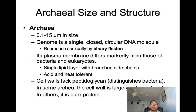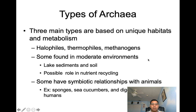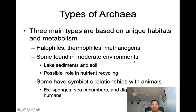Archaea thrive in unusual environmental conditions and extreme habitats — some in salty environments, some in hot environments, and some in anaerobic swampy environments. There are three main types of archaea based on unique habitats and metabolism: halophiles, thermophiles, and methanogens. Some are also found in moderate environments like lake sediments and soil, and they may play a role in nutrient recycling.